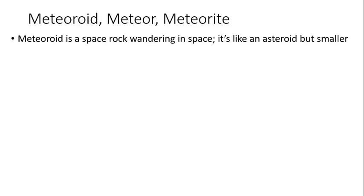We finish up this part on our solar system talking about meteors. Now, actually, there are three terms, and I'm hoping you can get these down. Associated with meteors, we have meteoroid, and they go in this order: meteor and meteorite.